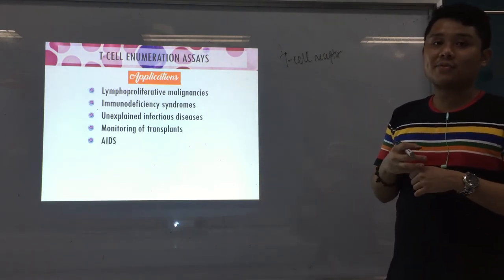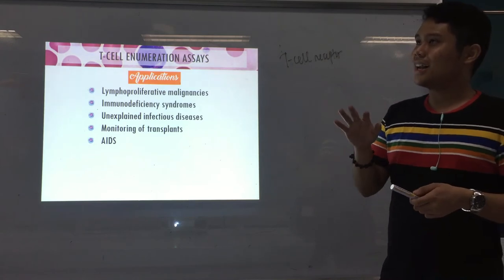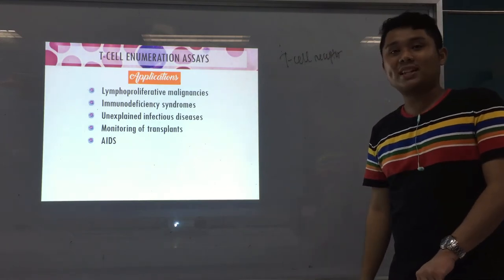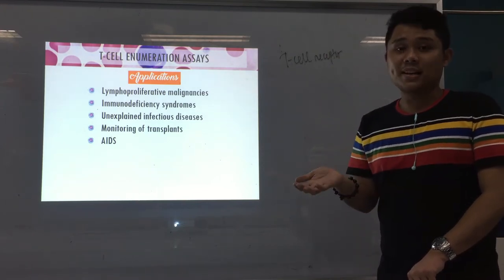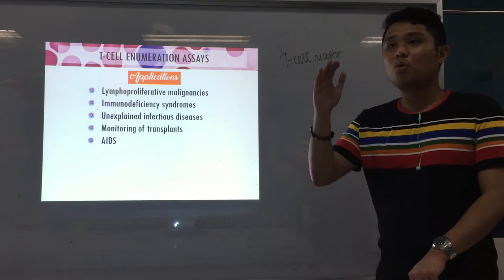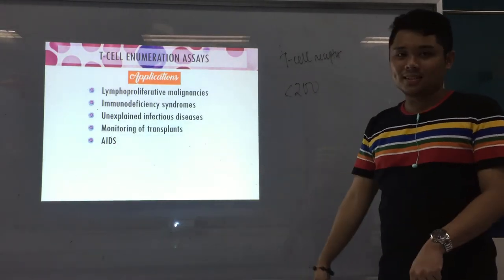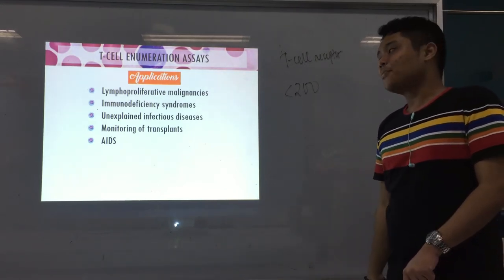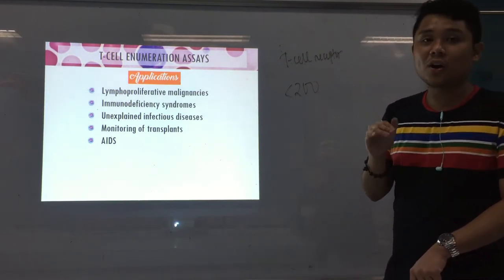Fourth, for monitoring of transplants — in organ rejection, we need to count T-cells because increased T-cells mean the body is not accepting the transplanted organ. Fifth, for AIDS/HIV: the target of HIV is your CD4 T-helper cell. HIV replicates inside CD4 cells, so as the CD4 count drops — below 200 — the patient becomes prone to AIDS and opportunistic infections.